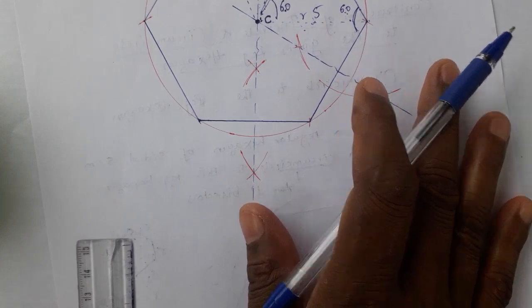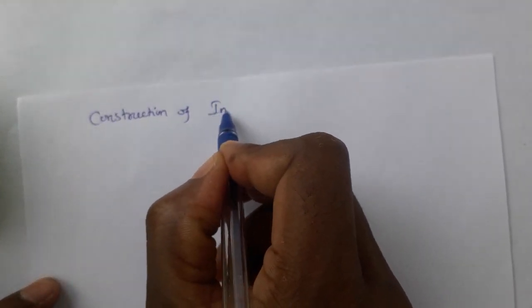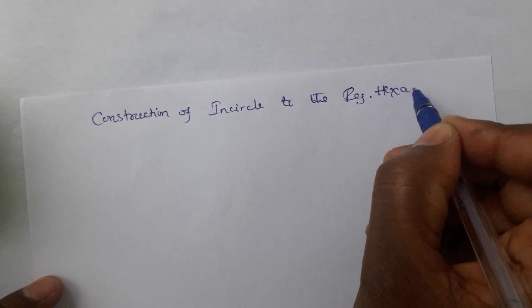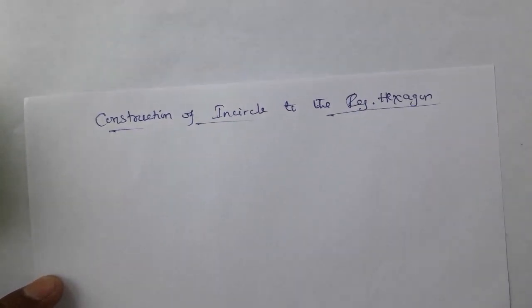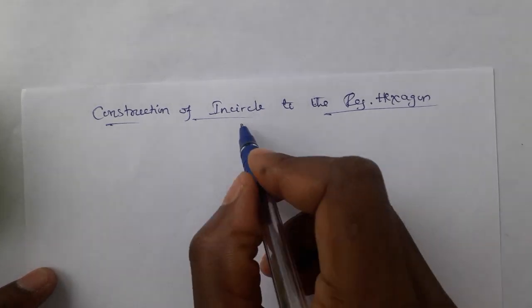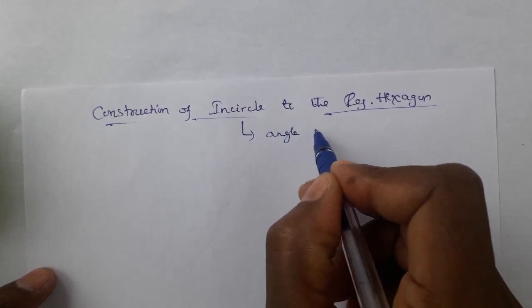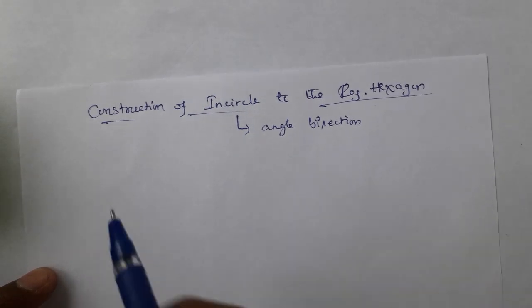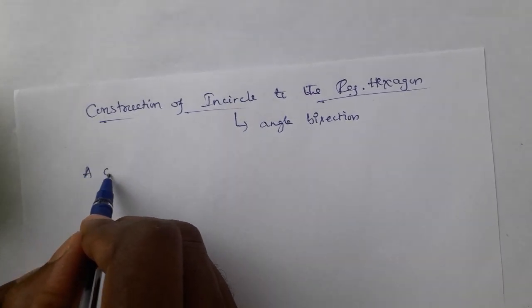So now we go for the next type of construction, that is the incircle. Construction of incircle to the regular hexagon. The construction of the regular hexagon is the same; we only change the circle part. For incircle, you know what type of bisection — angle bisection. Remember: angle bisection for incircle.